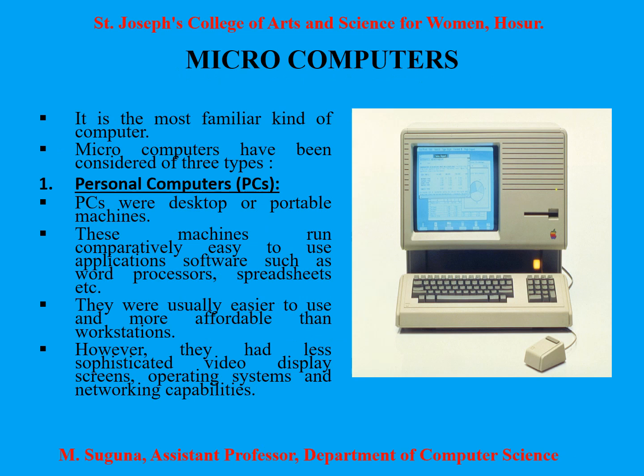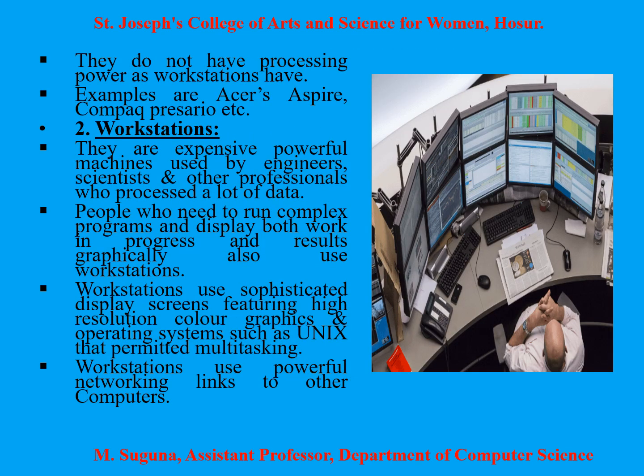First, coming to the microcomputers, it is a familiar kind of computer. They are of three types. First comes personal computers. As we are seeing in the diagram, it is a desktop computer which we can see in different computer labs and offices. They can use application software such as word processors, spreadsheets, etc. They are also easier to use and more affordable than workstations. They have less sophisticated video display screens, operating systems and networking capabilities. They do not have processing power as the workstations have.